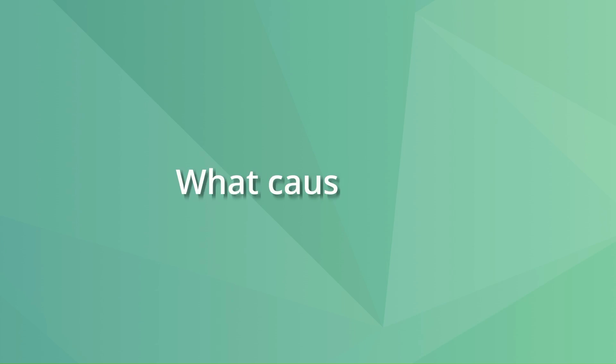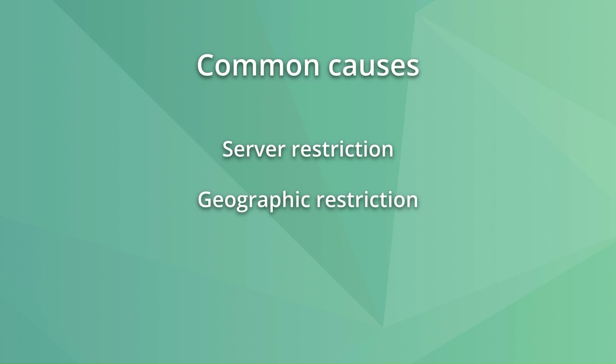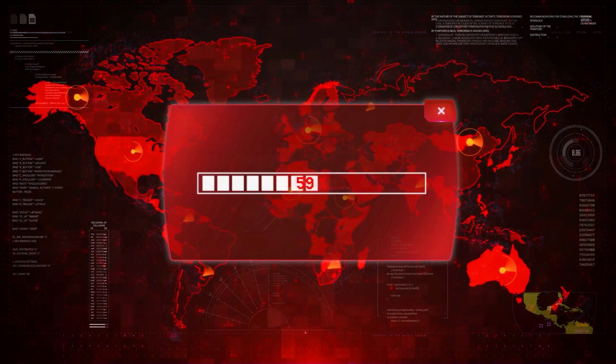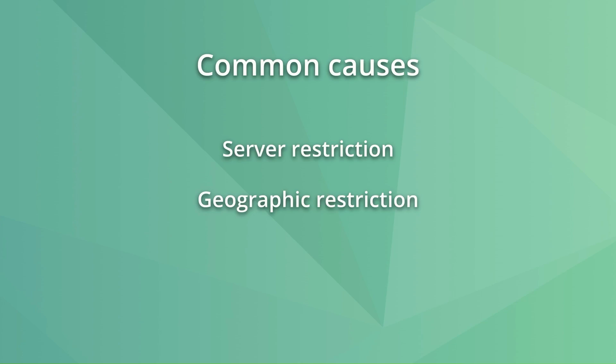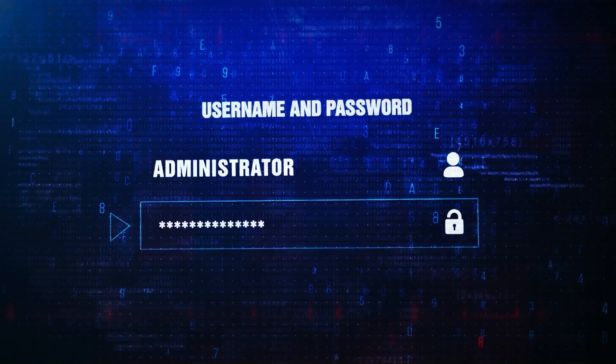In short, Googlebot has tried to crawl a URL on your website but was denied access. This indexing status can happen for several reasons. Some of the main ones are server restrictions, because the server is configured to block certain IP addresses. Geographic restrictions may also cause 403s if Googlebot is trying to crawl your website from one of those blocked regions. Pages requiring authentication can also be the cause of 403 errors, because Googlebot does not have the login credentials to access the URLs.